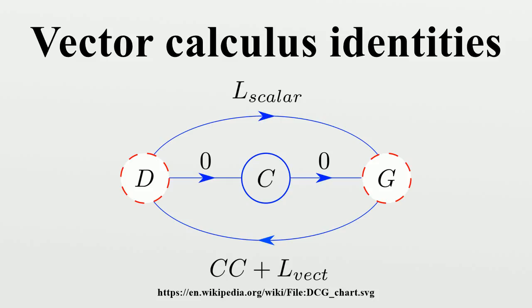Curl of the gradient. The curl of the gradient of any twice-differentiable scalar field is always the zero vector. Divergence of the curl. The divergence of the curl of any vector field A is always zero.